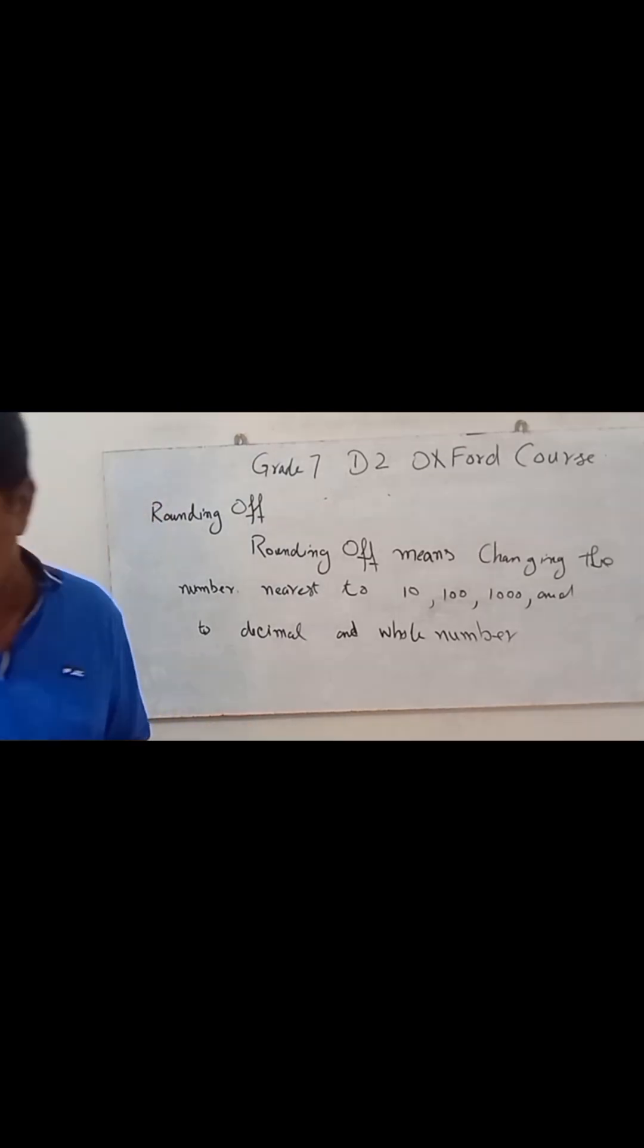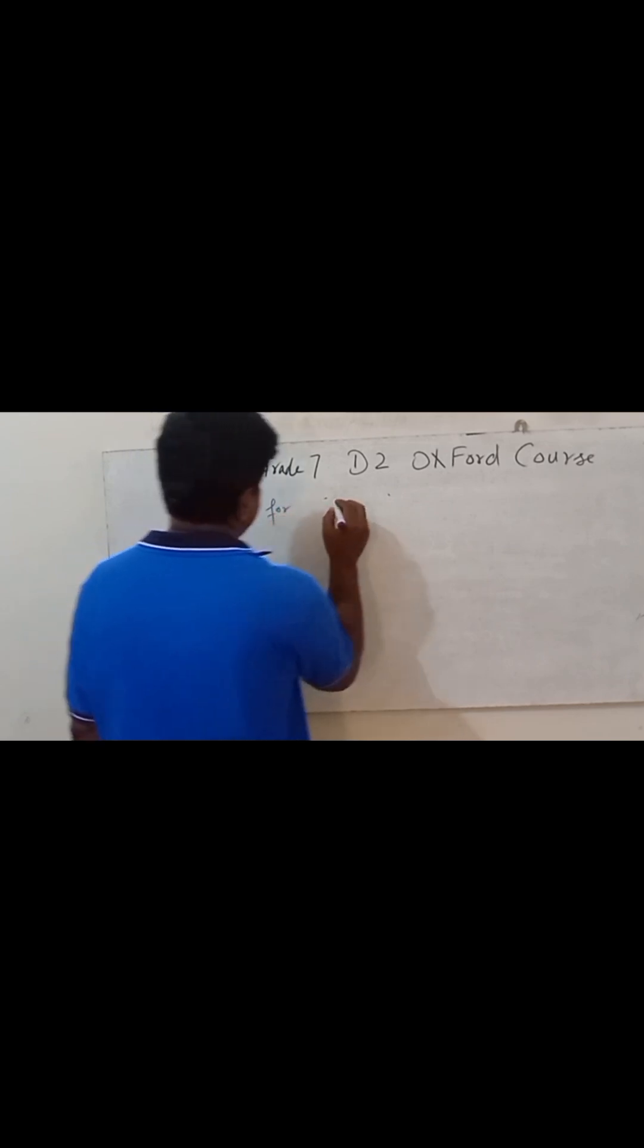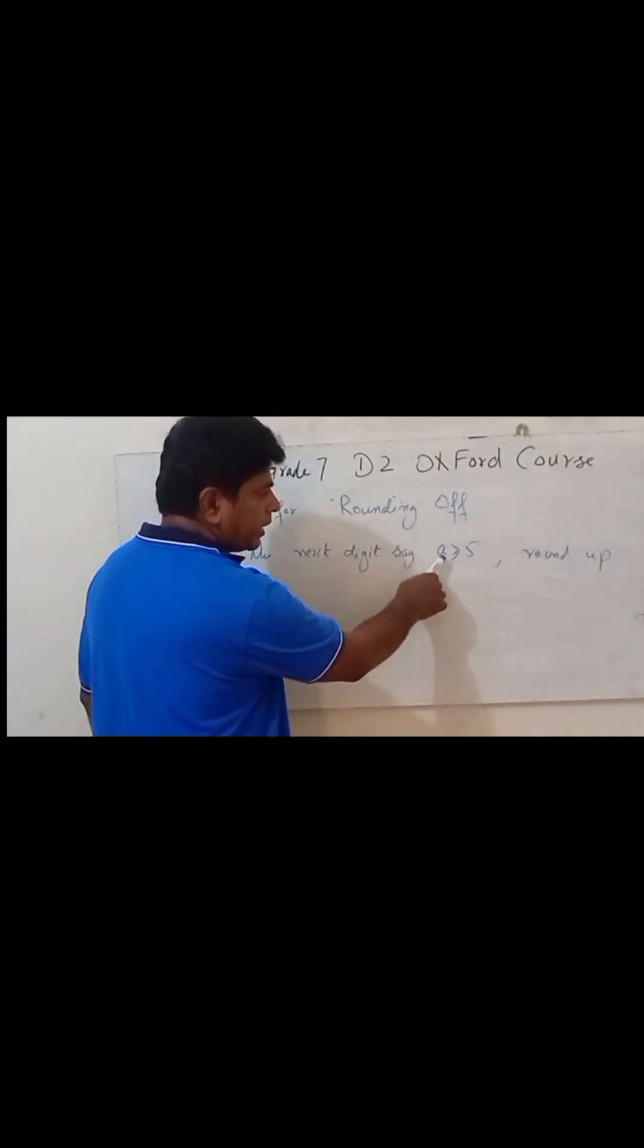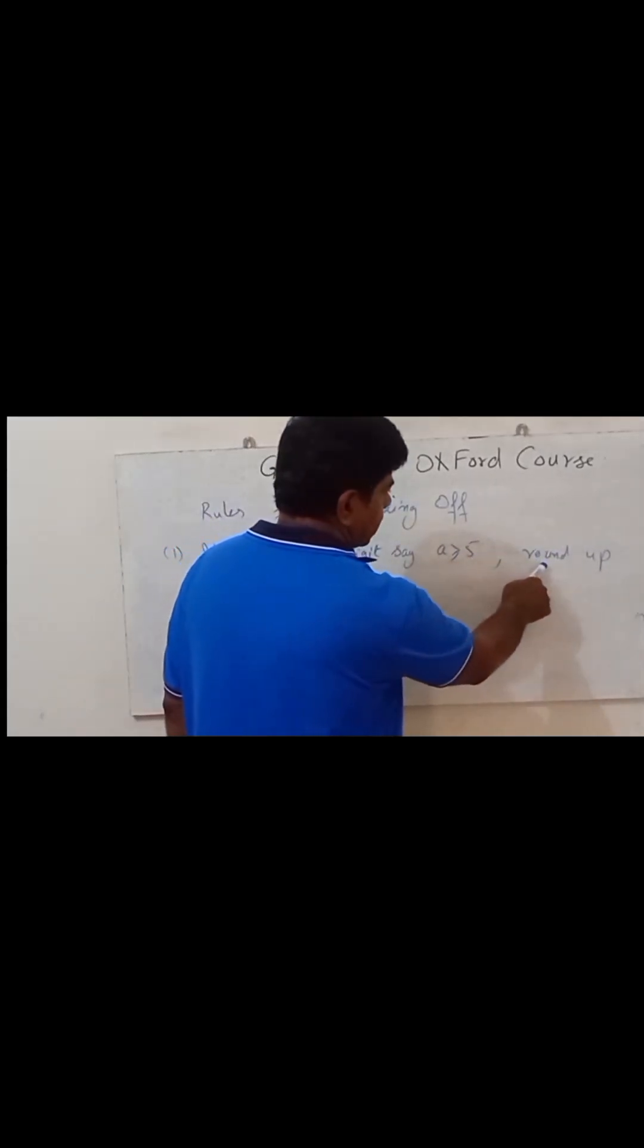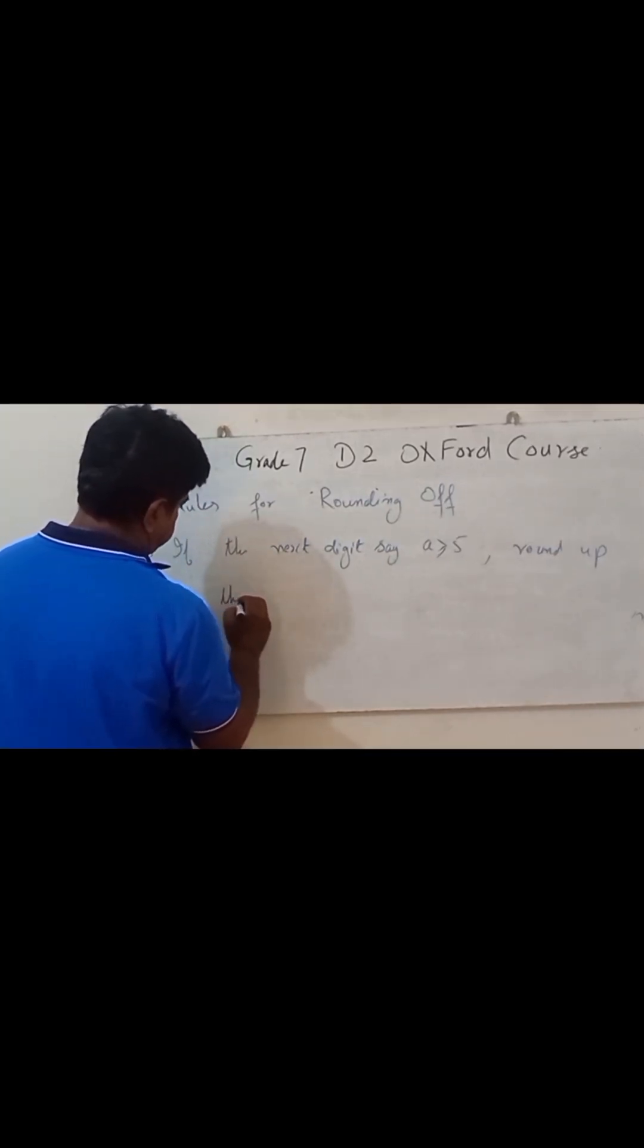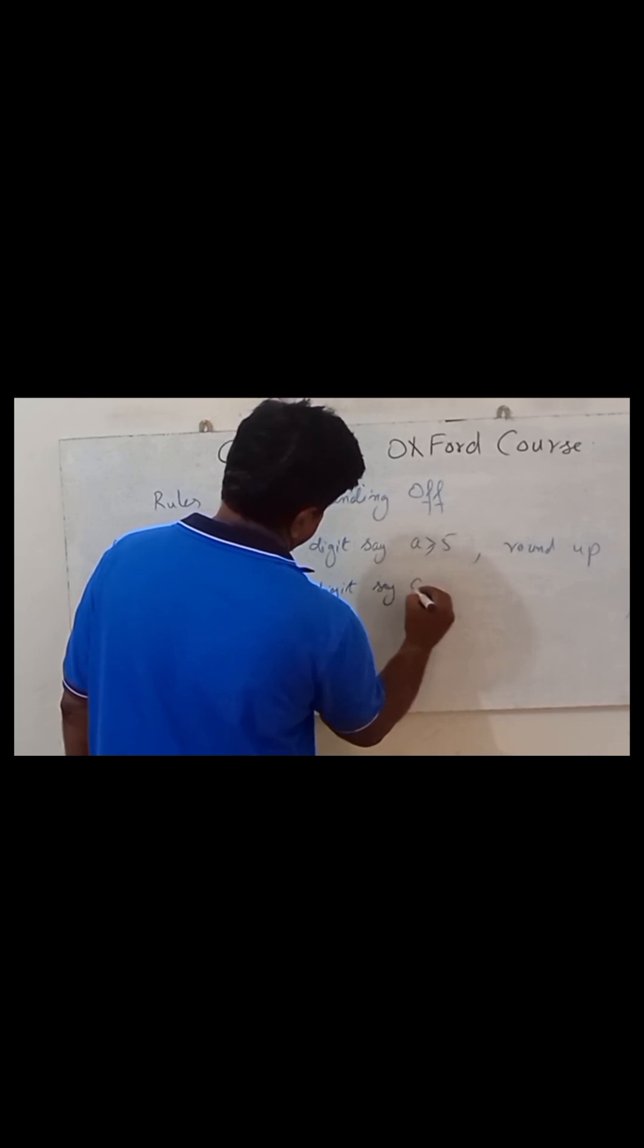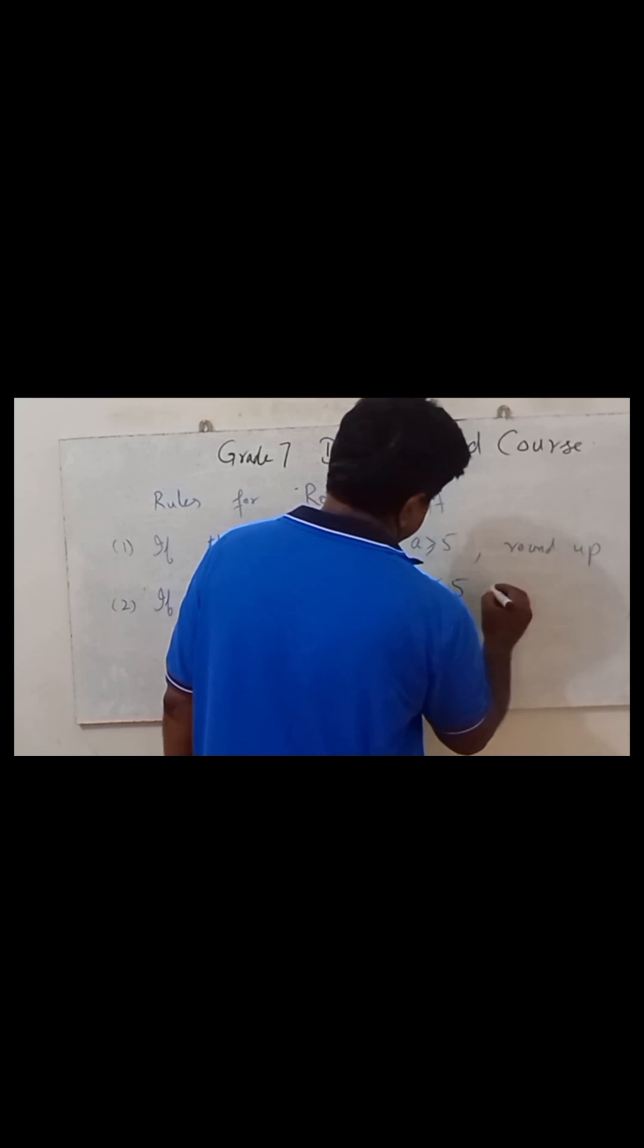Now, rules for rounding off. First rule is if the next digit, it may represent any number or digit, is greater than or equal to five, round up. Number two, if the next digit is less than five, round down.